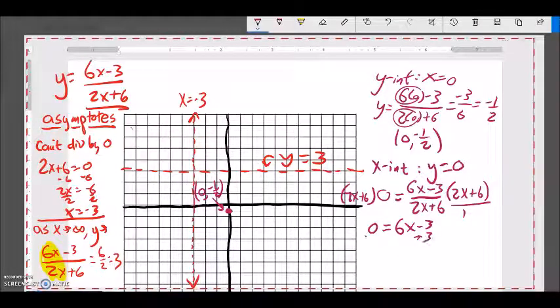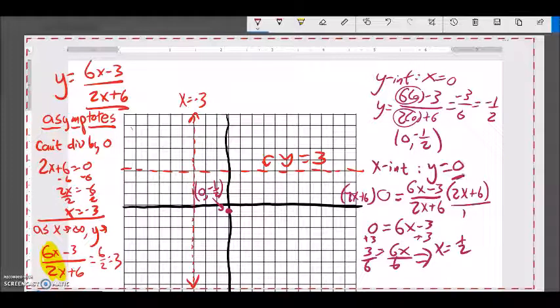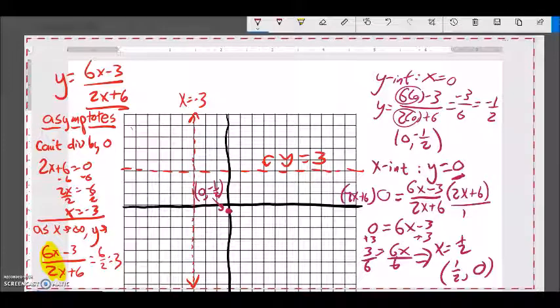Solve that. Add 3 to both sides. Divide by 6. Looks like x is 1 half. So when y is 0, x is 1 half. So there's my x-intercept at (1 half, 0).